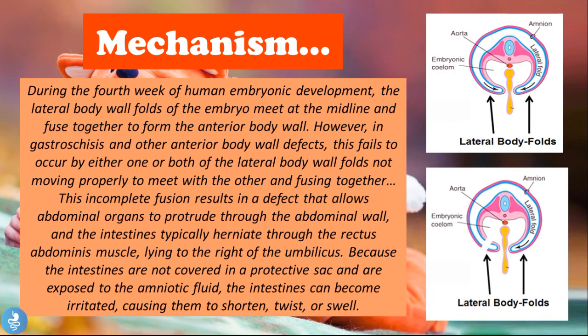During the fourth week of human embryonic development, the lateral body wall folds of the embryo meet at the midline and fuse together to form the anterior body wall. However, in gastroschisis and other anterior body wall defects, this fails to occur — either one or both of the lateral body walls fail to move properly to meet and fuse together.